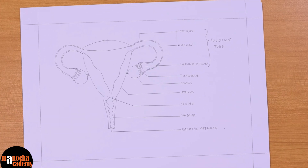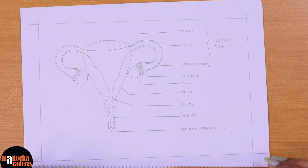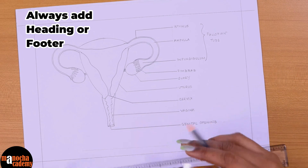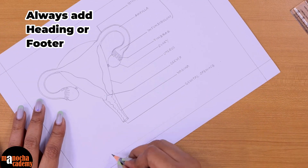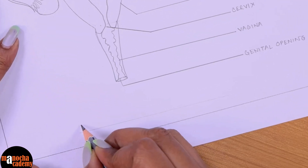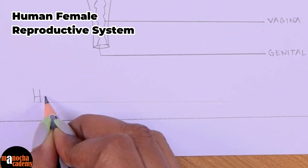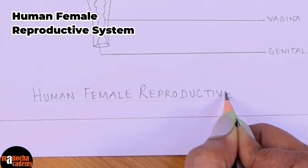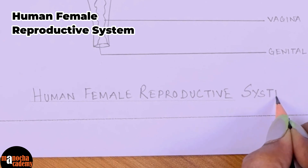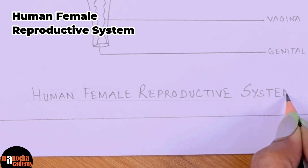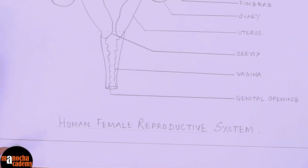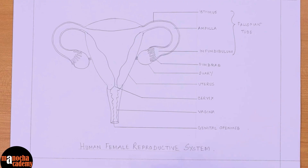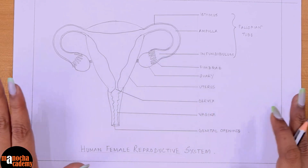That is the structure of the female reproductive system. Never forget a header or a footer which will tell you what diagram you have drawn. This is the human female reproductive system — and that is how you draw the human female reproductive system with ease.